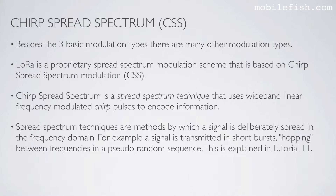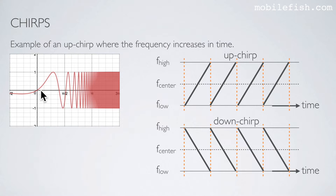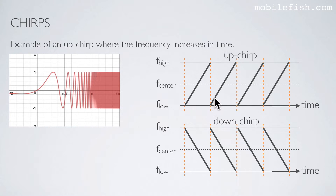This is already explained in tutorial 11. The chirp, often called a sweep signal, is a tone in which the frequency increases or decreases with time. If the frequency increases in time it is called an up chirp, and when it decreases in time it is called a down chirp. Here's an example of an up chirp where the frequency increases in time. The lowest frequency is over here and the highest frequency is over here. The frequency increases in time; when the maximum frequency is reached it jumps back to its lowest frequency and the process starts all over again.